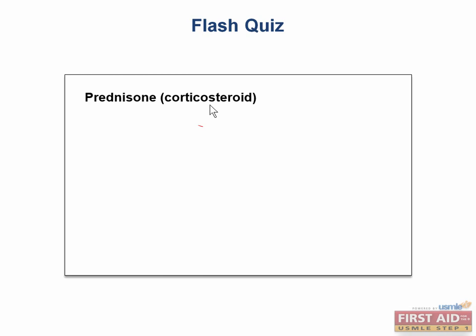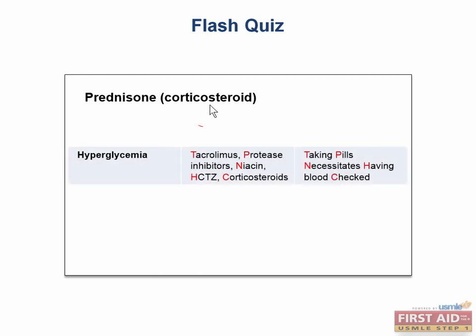Let's take a look at what other medications can cause hyperglycemia. Some of the other medications that will cause hyperglycemia as part of their side effect profile include tacrolimus, protease inhibitors, niacin, hydrochlorothiazide, and of course our corticosteroids, which we just covered.